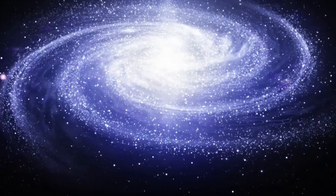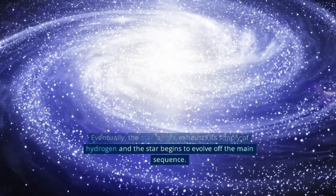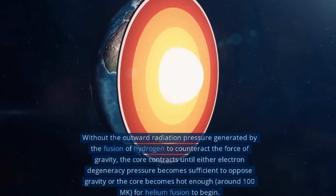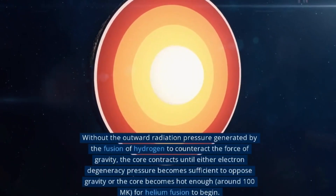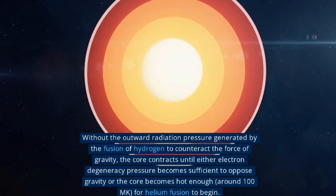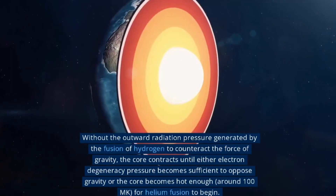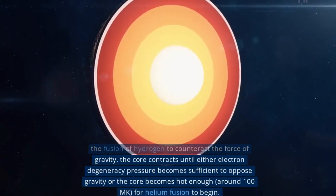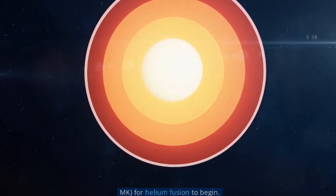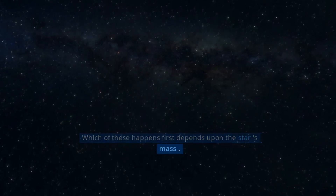Mature stars: Eventually, the star's core exhausts its supply of hydrogen and the star begins to evolve off the main sequence. Without the outward radiation pressure generated by the fusion of hydrogen to counteract the force of gravity, the core contracts until either electron degeneracy pressure becomes sufficient to oppose gravity or the core becomes hot enough — around 100 million Kelvin — for helium fusion to begin. Which of these happens first depends upon the star's mass.